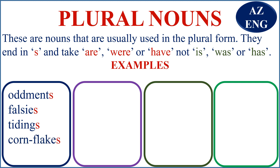Cornflakes — 'where are my cornflakes?' I do not say 'where is my cornflakes?' Why? Because it is a plural noun. Where are my cornflakes? Crossroads. Terms — 'the terms are', not 'the terms is', or 'the terms have', not 'the terms has'.